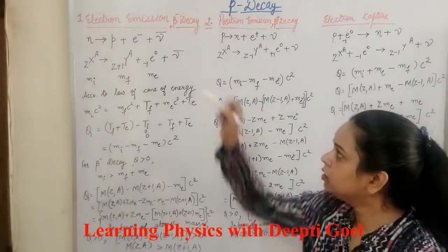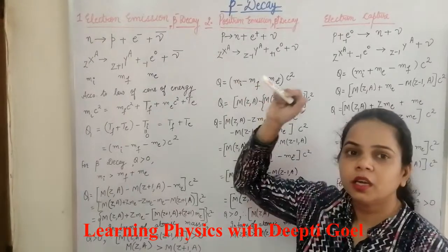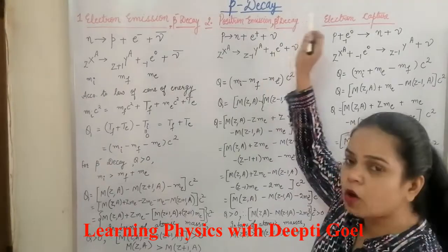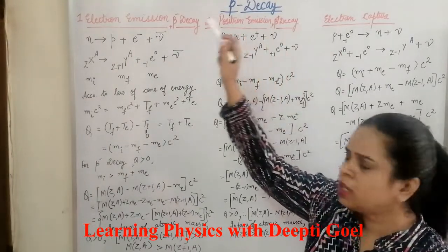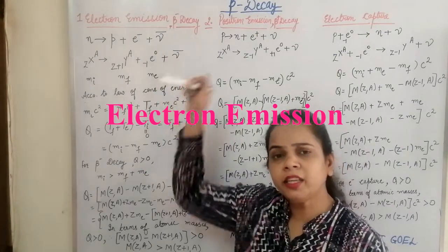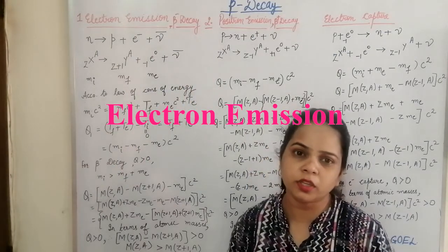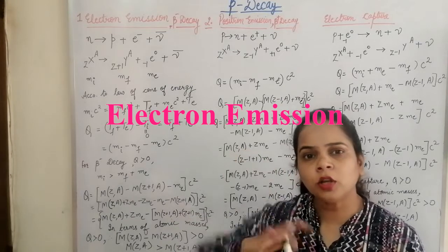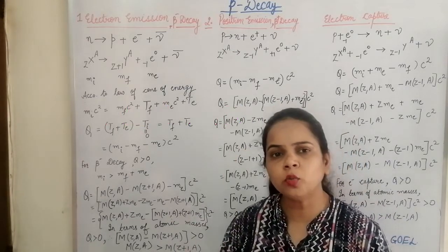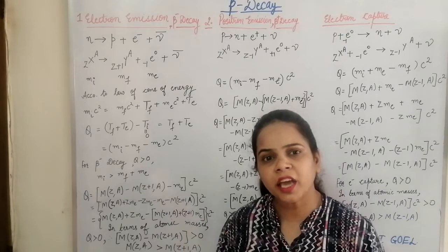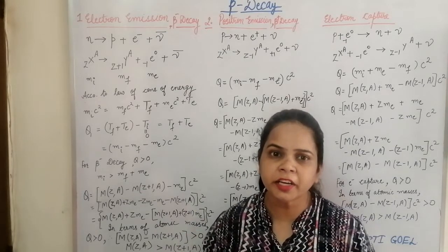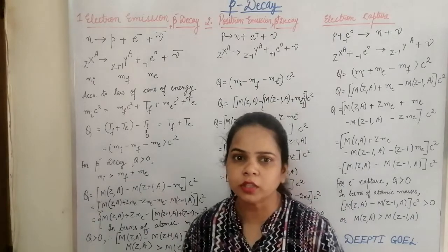Due to this there is electron emission, positron emission, or electron capture. In the beta minus decay process, it is not that the electron is present inside the nucleus. It is that the constituents — protons or neutrons — are changing into one another. And when they decay into each other, electrons or positrons are created and ejected out of the nucleus.